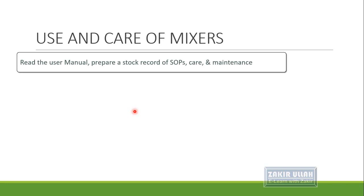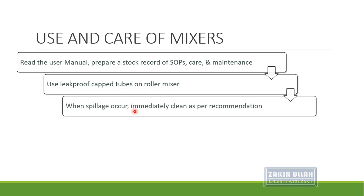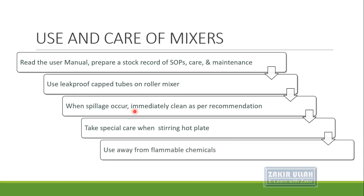For every instrument, read the user manual for its operation and prepare a stock record containing all the SOPs, care, maintenance, and any problems encountered. When using a roller mixer, use capped tubes with leak-proof caps so contents do not leak out. If spillage occurs, immediately clean all the area and the mixer as recommended by the manufacturer. When using a magnetic hot plate stirrer, take special care as the plate is hot and may cause heat injury. Use these mixers away from any flammable chemicals.